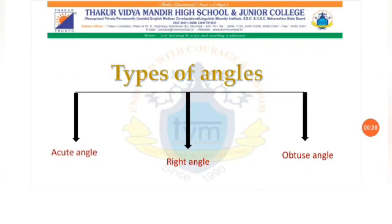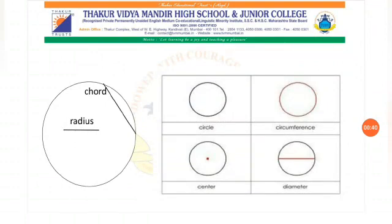What is an angle and its types? That is acute angle, right angle, and obtuse angle. Remember, students? We also studied the parts of a circle: that is radius, center, diameter, circumference, and a chord.